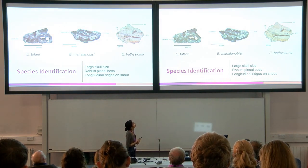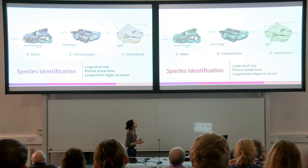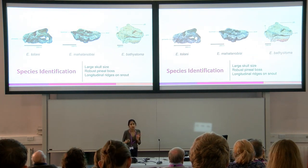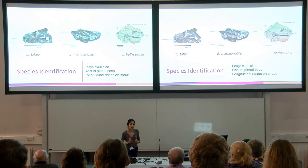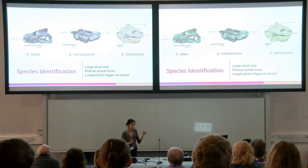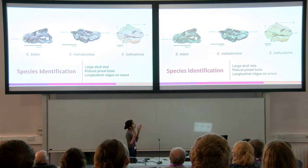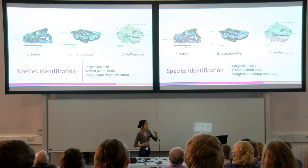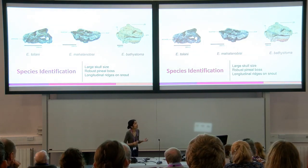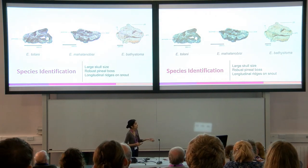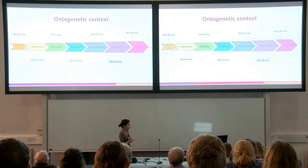The three features I focused on for species identification were skull size, the presence or absence of a pineal boss, and the longitudinal ridges on the snout. Endothiodon tuhlanyi is different because it has small tusks and no pineal boss, but rather a thin collar of bone surrounding the pineal foramen. Endothiodon mahalanobisi differs because of its smaller skull, much lower pineal boss, and one ridge on the snout. Endothiodon bathystoma — the one I'm studying — is unique because it has a very robust pineal boss, a large skull size, and three ridges on the snout.